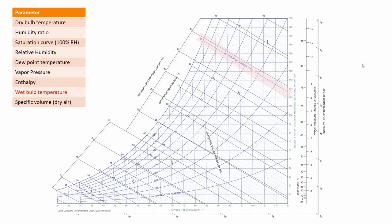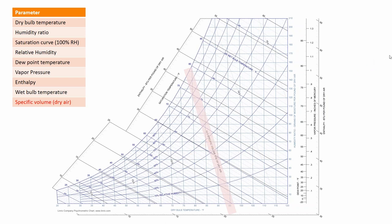The last element is specific volume — hard to see because they're very faint lines, but they are a volume per mass measurement, essentially the inverse of density. You can see lines at 14.5 and 15. And that, folks, is the anatomy of the psychrometric chart — not so bad once you dissect it and really focus in on it.